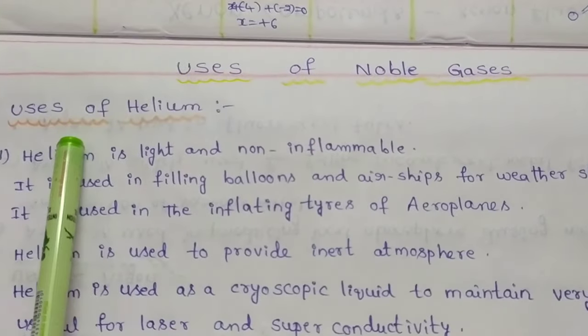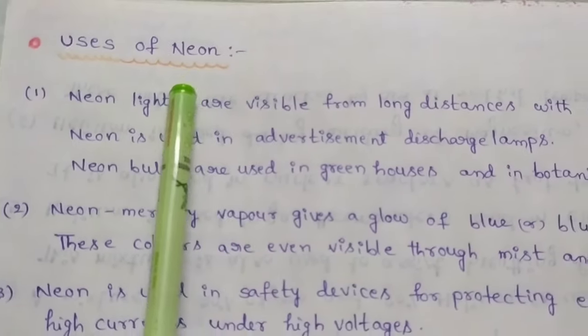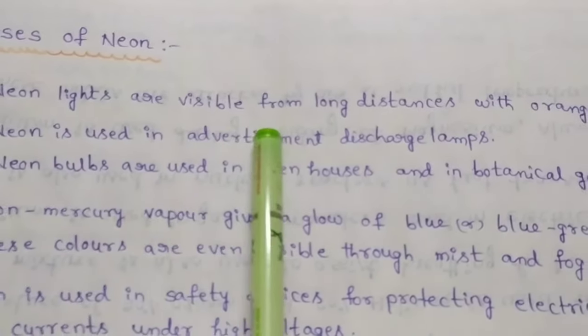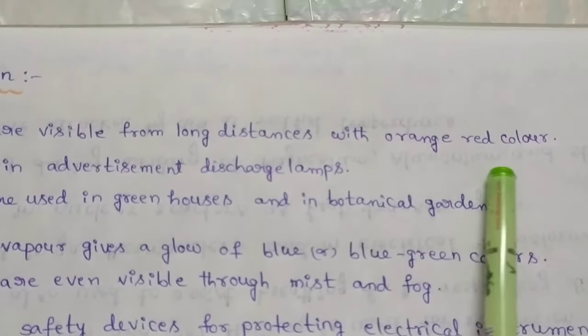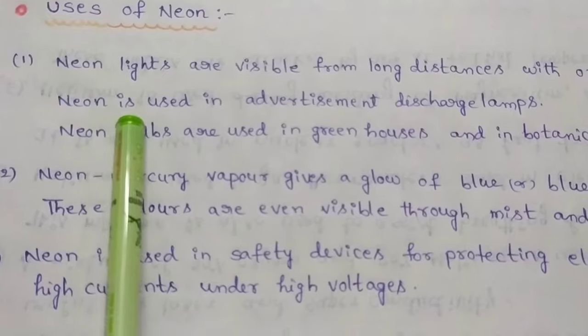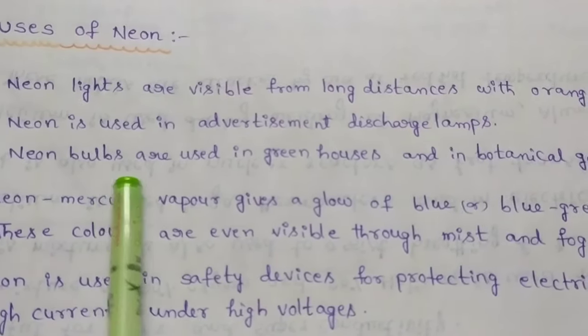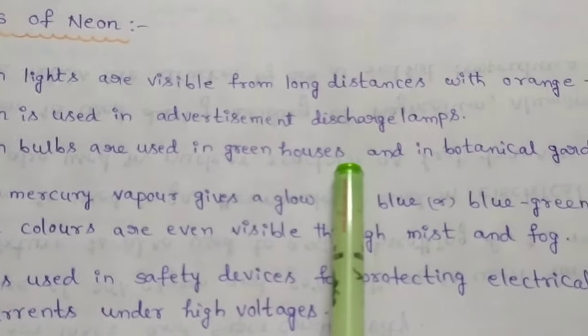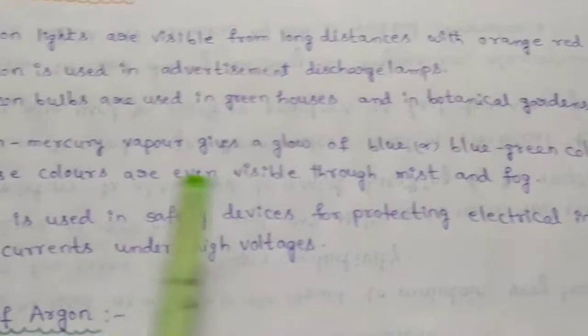These are the uses of helium. Now we discuss the uses of neon. Neon lights are visible from long distances with orange red colour. Neon is used in advertisement discharge lamps. Neon bulbs are used in greenhouses and in botanical gardens for decoration.